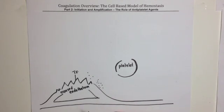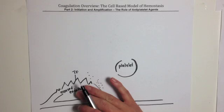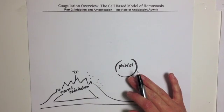We begin where we left off in part one. The endothelium has been damaged by the rupture of an atherosclerotic plaque. Tissue factor has been exposed, and platelets have been recruited to the area.